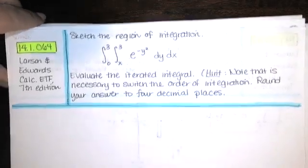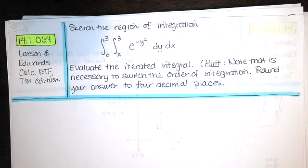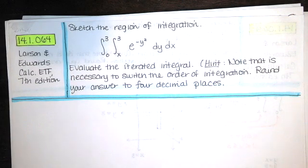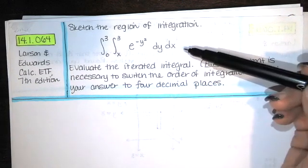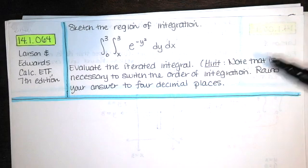In this video, we solve problem 14.1.064 from the Larson and Edwards Calculus Early Transcendental Functions text, 7th edition. We're asked to sketch the region of integration and we're given this double integral. Then we're asked to evaluate the iterated integral, and we're given this hint.